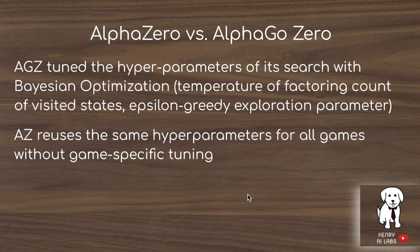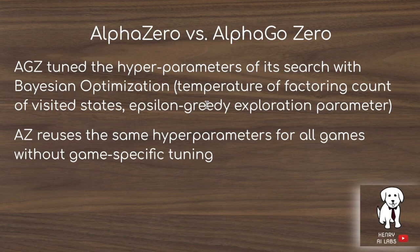Another distinction is that AlphaGoZero uses Bayesian optimization of hyperparameters, such as the temperature controlling how visit counts are weighted in the Monte Carlo tree search, and the epsilon parameter for epsilon-greedy exploration — where you take the optimal action with probability epsilon and select randomly with probability one minus epsilon. In AlphaZero, they use the same hyperparameters for all games rather than optimizing specific parameters for chess, shogi, and Go separately.